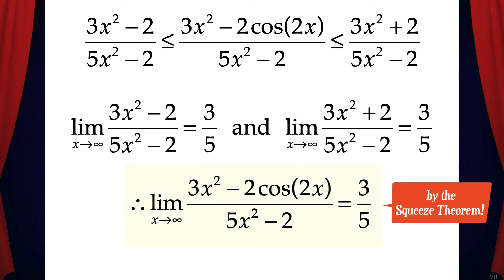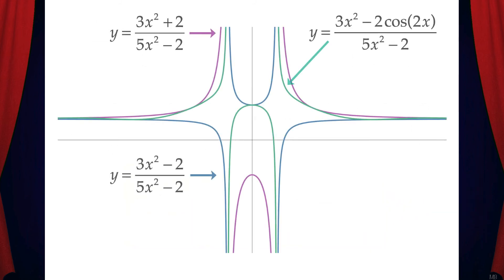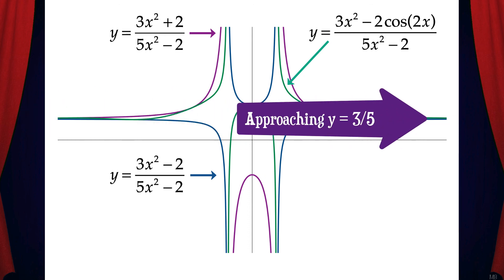Therefore, the limit of the middle function (3x² - 2·cos(2x)) / (5x² - 2) is also equal to 3/5 by the squeeze theorem. We can observe this graphically as well. The green function is the function we were trying to find the limit of as x goes to infinity: (3x² - 2·cos(2x)) / (5x² - 2). It's trapped between the purple and blue functions, which all approach a horizontal asymptote at y = 3/5.